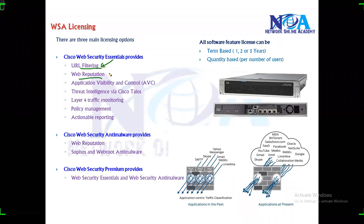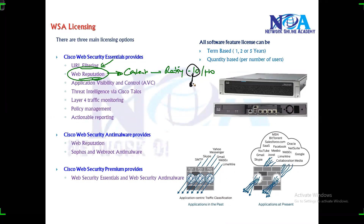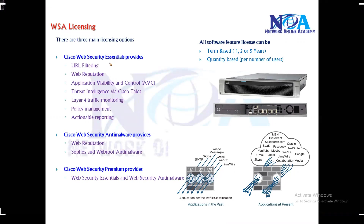There is also something called web reputation. Websites have a rating ranging from minus 10 to plus 10. If a URL has a rating of minus 10, it is considered a very bad website and will be automatically blocked. This rating is determined by many factors maintained in a centralized database. I'll cover web reputation in more detail in the next sections.